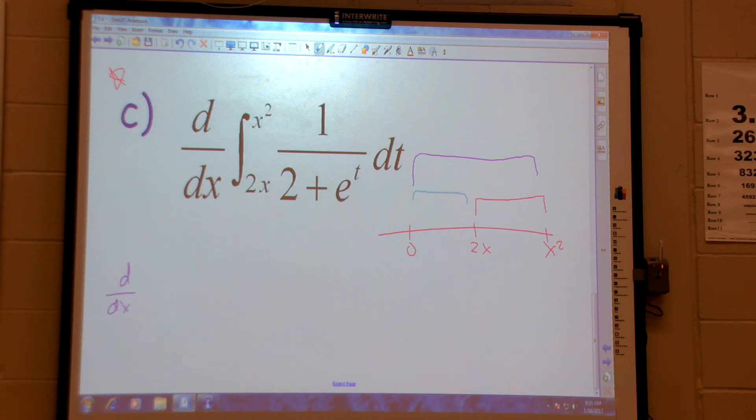I want d dx, the integral 0 to x squared, 1 over 2 plus e to the t dt, subtract out d dx, the integral of 0 to 2x, 1 over 2 plus e to the t dt. So basically I'm taking it from 0 because I want a constant and 0 is the easiest constant. There's no real reason I picked 0. But 0 to x squared gives me the whole thing. Take out the 0 to 2x, I'm left with exactly what I want.